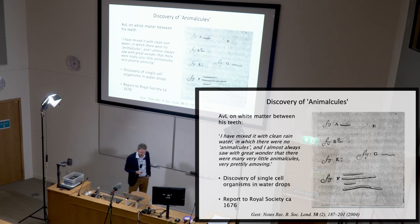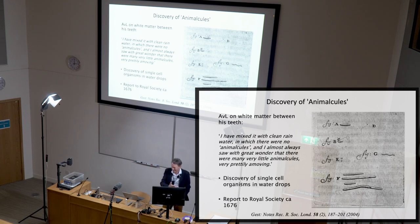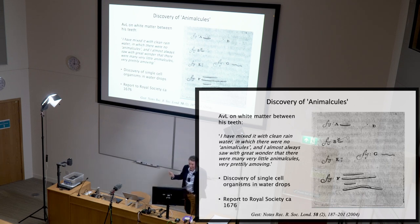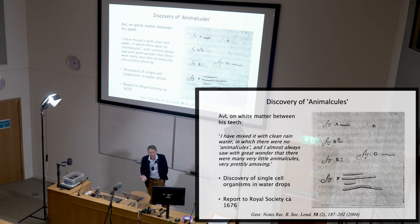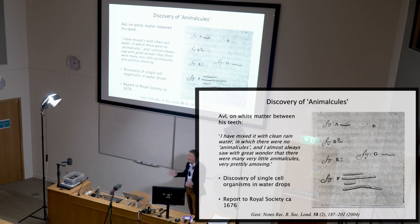Leeuwenhoek lived in the Dutch Golden Age — an incredible time of liberal intellectual thought in Holland. This was when Galileo, Spinoza, Descartes, and John Locke were active there. It was also the time of Vermeer and Rembrandt. All the thinkers who were banned from other countries could convene in Holland and invent amazing things.